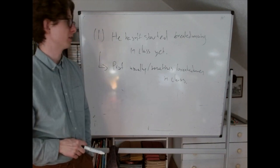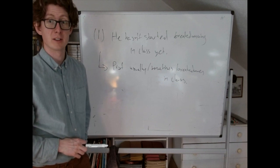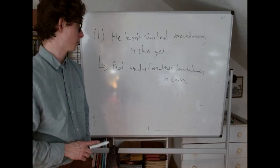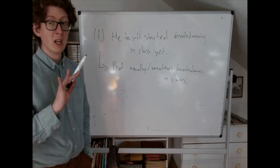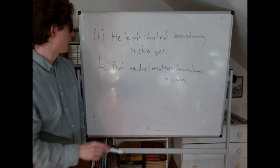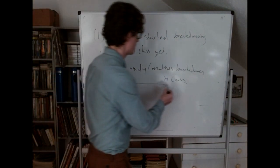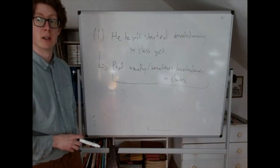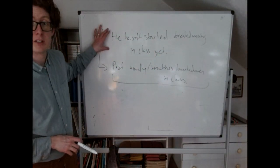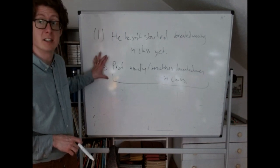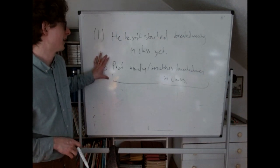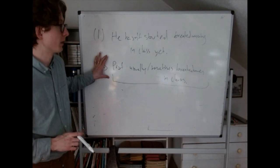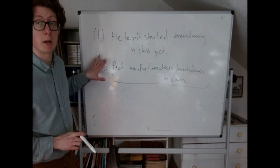We would tend to infer something like: the professor sometimes or usually breaks dancing in class. We tend to infer more from this sentence than just what it literally says — we would infer the further information that the professor sometimes has been known to break dance in class, maybe more than once. This extra information is what we're going to call an implicature. An utterance of this sentence tends to implicate the further information that the professor sometimes or usually break dances in class.